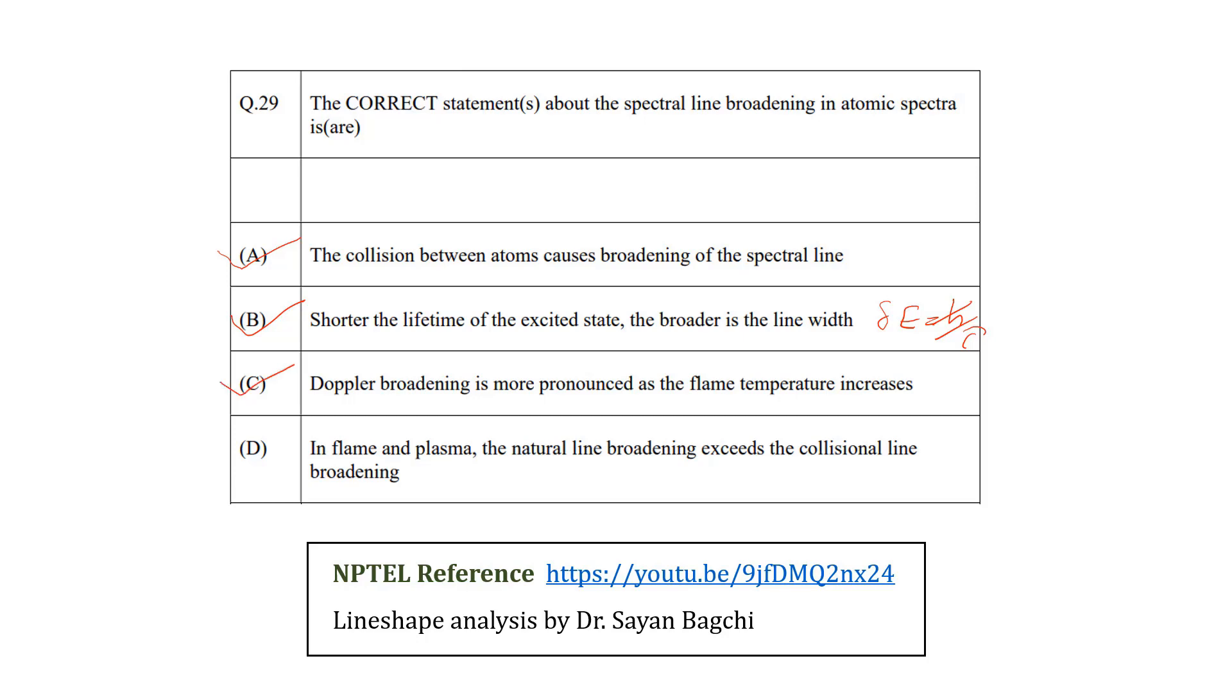We can check the fourth option. In flame and plasma, natural line broadening exceeds the collisional line broadening. In flame and plasma, since the number of electrons and ions are more, there is a high chance of collisional line broadening. And the natural line broadening is an intrinsic factor.